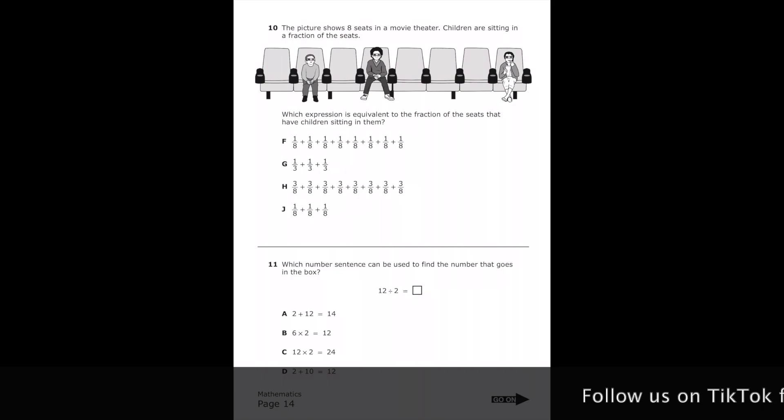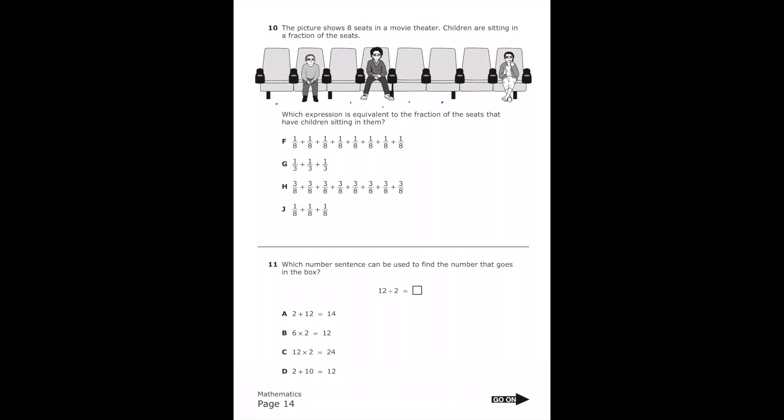Number 10. The picture shows eight seats in a movie theater. Children are sitting in a fraction of the seats. Which expression is equivalent to the fraction of the seats that have children sitting in them? So if we look at the seats, we have 1, 2, 3, 4, 5, 6, 7, 8 total seats. So that's going to be the denominator. And then we have three of them that are actually being sat in. So the total is going to be 3 over 8, or we could separate that out into 1 over 8 for the first person, another 1 over 8 for the second person, and a third 1 over 8 for the third person. And if we look at our answer choices, we're going to get letter J.